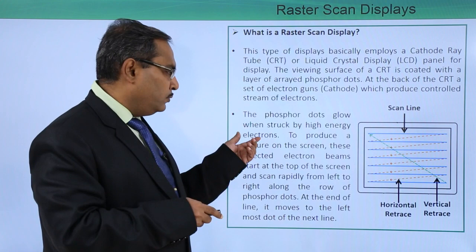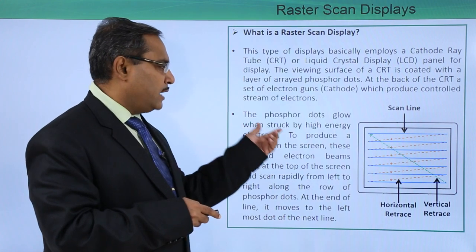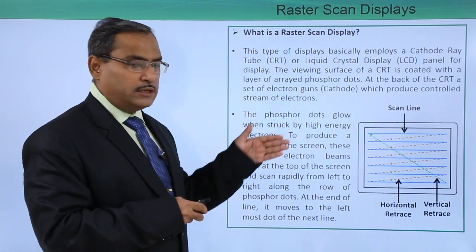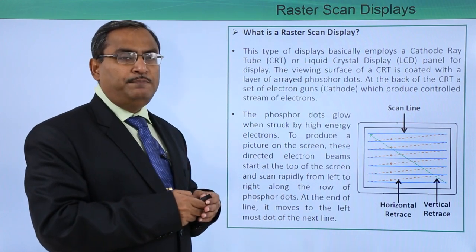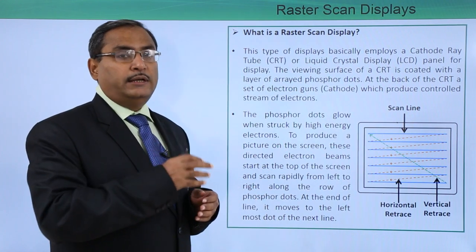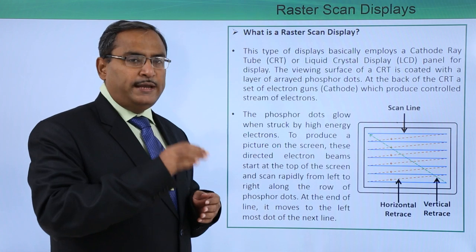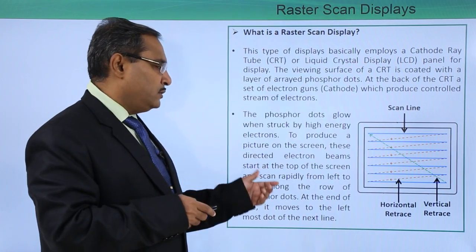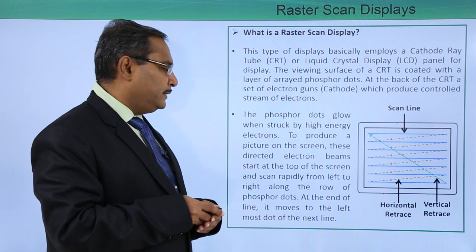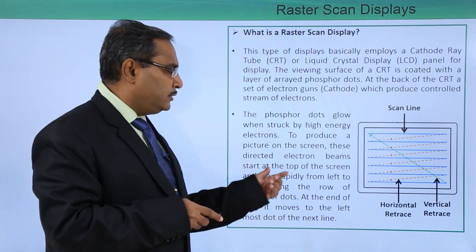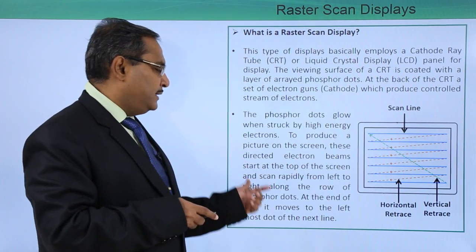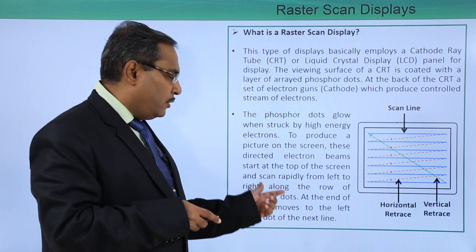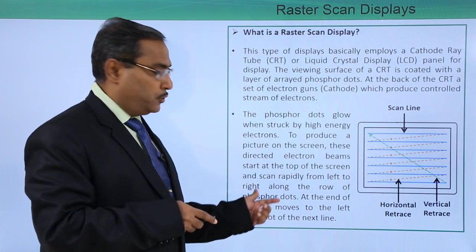The phosphor dots glow when struck by the high energy electrons — at the back side of the screen, they will glow when the electron beam hits on them. To produce a picture on the screen, these directed electron beams start at the top of the screen and scan rapidly from left to right along the row of phosphor dots.